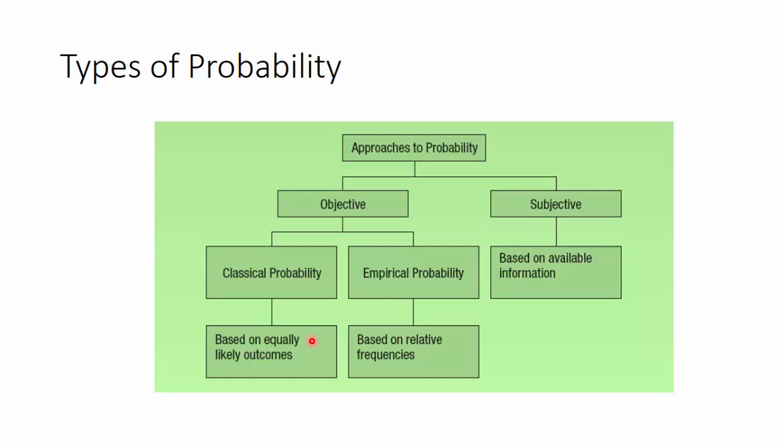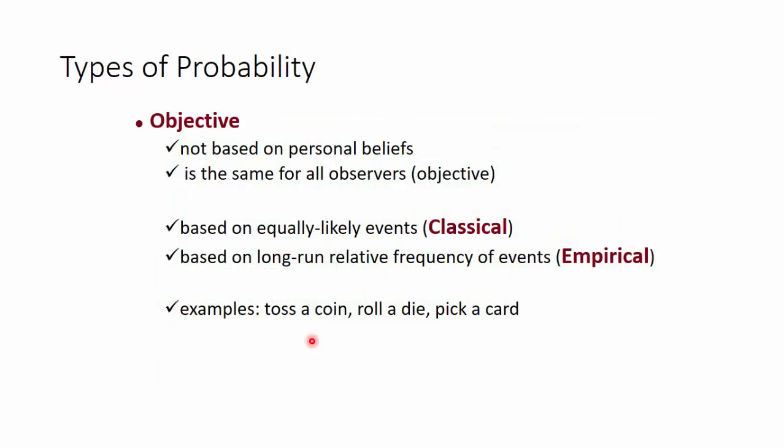Let's look at what each of them mean and how do we understand each. Objective is not based on anybody's beliefs, ideas, or understanding. It is the same for all people. It remains to be the same, whoever calculates or finds. And they are based on equally likely if it's classical, and based on long-run relative frequency if it's empirical.